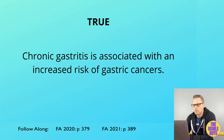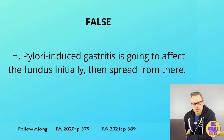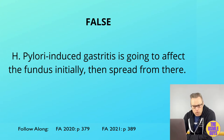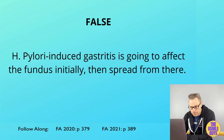True or false — this is false. Your most common cause of chronic gastritis is going to be H. pylori, and that also increases the risk of PUD and MALT lymphomas. Now, this is first going to affect the antrum, then it's going to make its way to the body of the stomach.